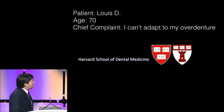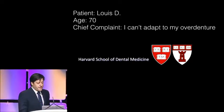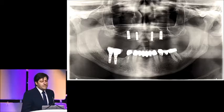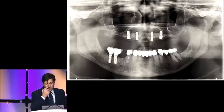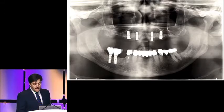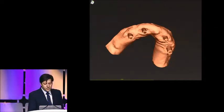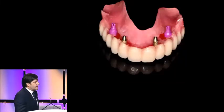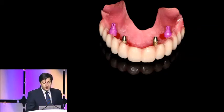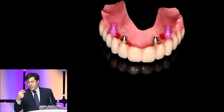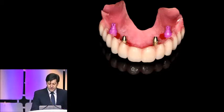His chief complaint is: 'I can't adapt to my overdenture.' This is a patient that we treated some time ago with four implants for an overdenture. We now encounter some complications with the two anterior implants, so the prognosis is questionable. We decided to transform this case into a full fixed rehabilitation. We took a digital impression with scan bodies to prepare a tooth setup, done on a printed model. The existing implants will be the repositioning elements for most of the devices we will use today.